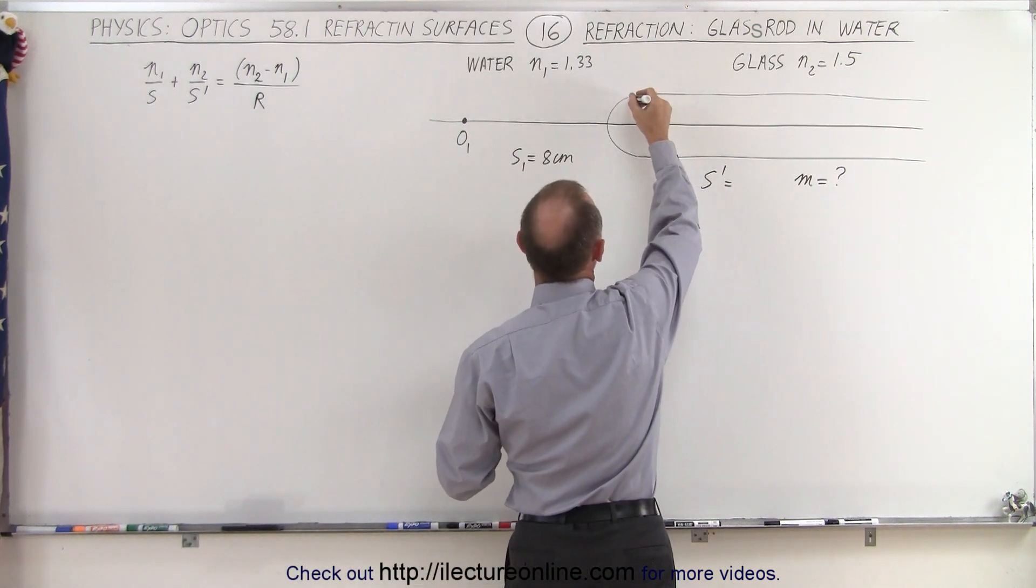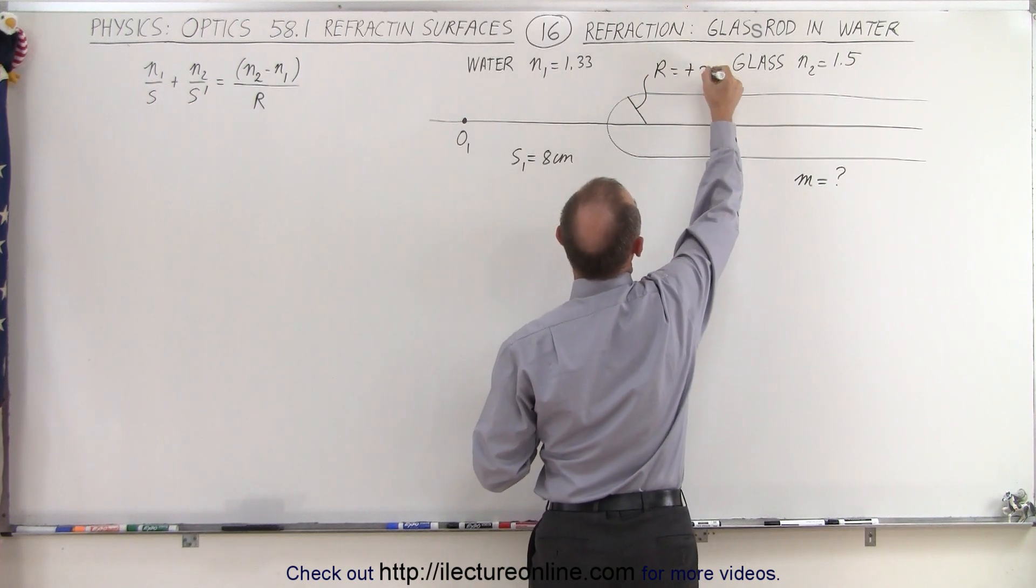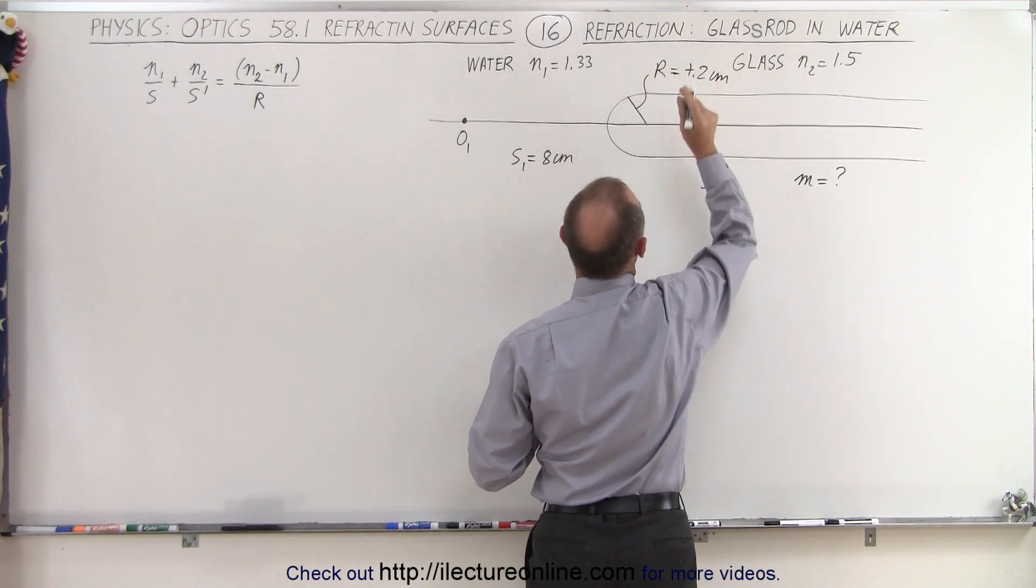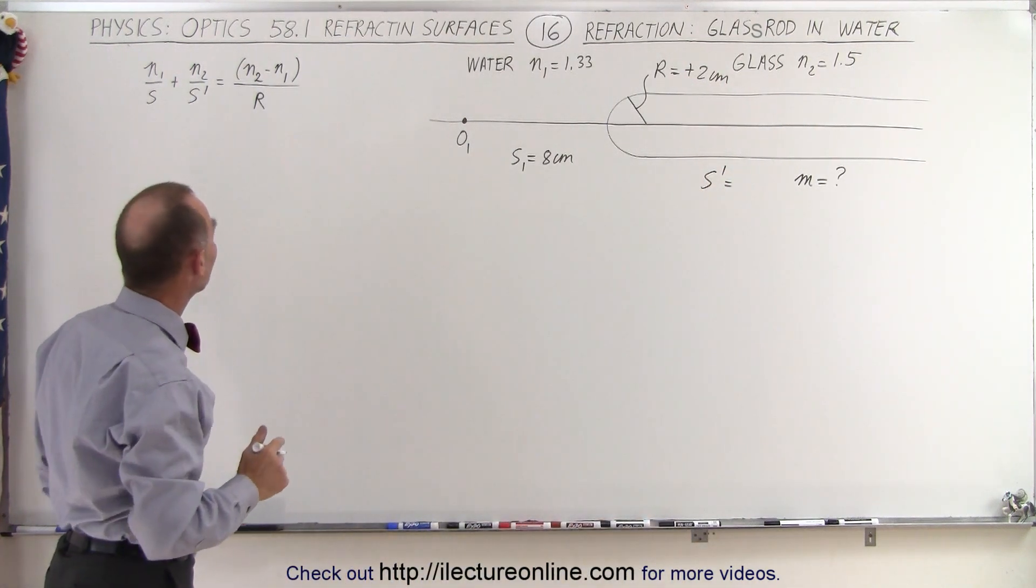We have a radius of curvature R which is going to be a positive 2 centimeters, and so where is the image going to be and what's going to be the magnification? Well let's find out.